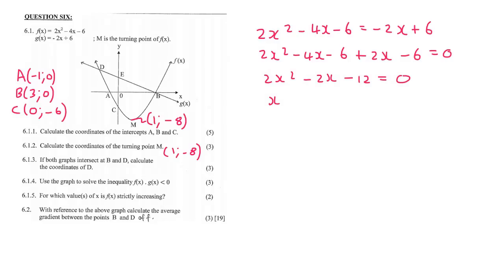Then simplify by putting all the x's together and all the numbers together. I'm going to divide by 2, and now I can factorize. So it'll be x minus 3 and x plus 2. You can also use the quadratic formula if you want. So x will be equal to 3 or x will be equal to minus 2.